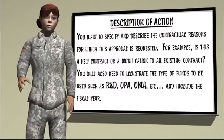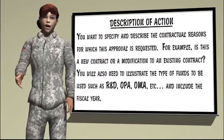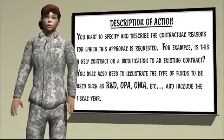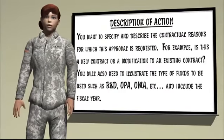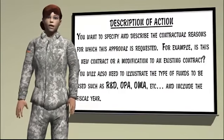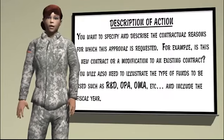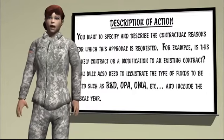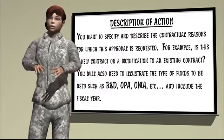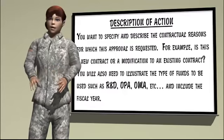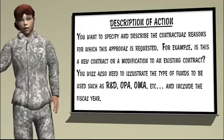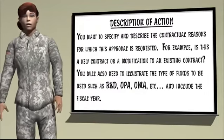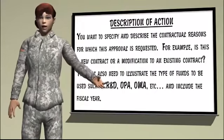Description of Action. You want to specify and describe the contractual reasons for which this approval is requested. For example, is this a new contract or a modification to an existing contract? You will also need to illustrate the type of funds to be used, such as R&D, OPA, OMA, etc., and include the fiscal year.